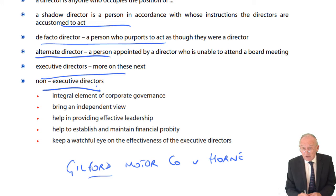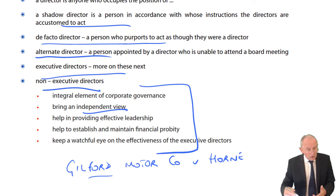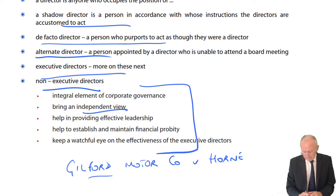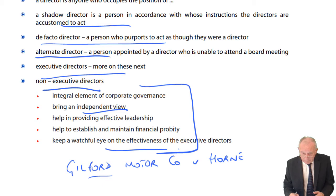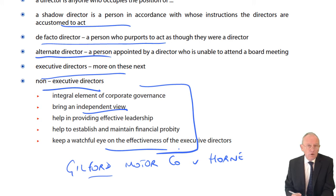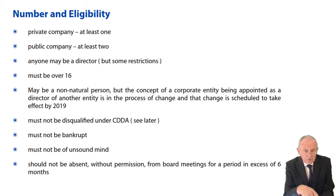Now in the UK, if you're a quoted company, you shall have some non-executive directors. Their role — very briefly in F4 — is to bring an independent view. They help in providing effective leadership. They help to establish and maintain probity, honesty, and uprightness. They keep a watchful eye on the effectiveness of the executive directors; they act in a supervisory capacity. They ensure that the executive directors are paying proper attention to long-termism for keeping the company alive. Non-executive directors are a modern idea and an integral element of quoted companies in the UK.